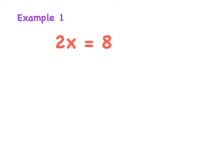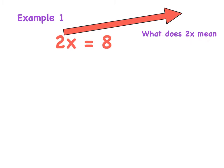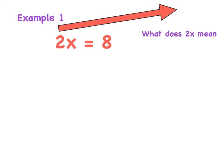Let's have a look at the first example. Here we've been given 2x is equal to 8. As I said, the equals divides this sum into two parts. I am not interested in finding what 2x is — I need to find what x is. So I need to get rid of this 2. Remember, 2x means 2 multiplied by x. We can write it as brackets: 2 multiplied by x.